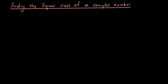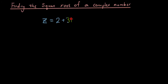Just before we go to finding square roots, let's see if you guys remember how to find something squared. So if I give you z equals 2 plus 3i, you should be able to tell me what z squared is. Have a go at that and come back when you're done.